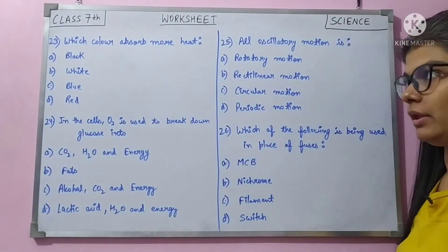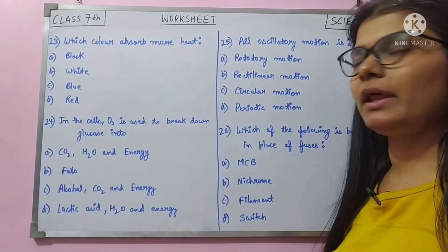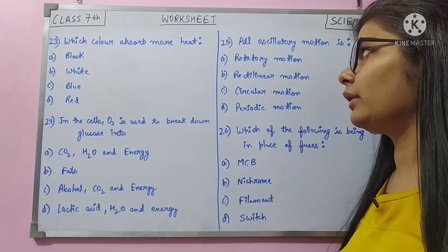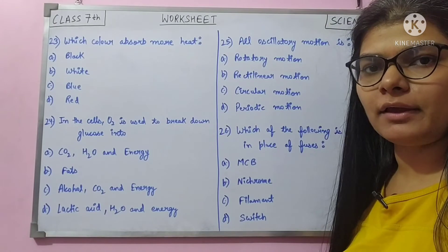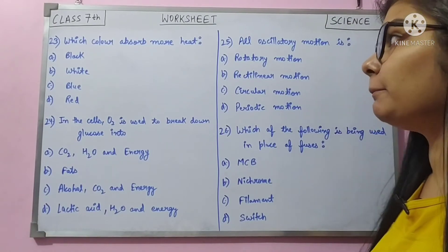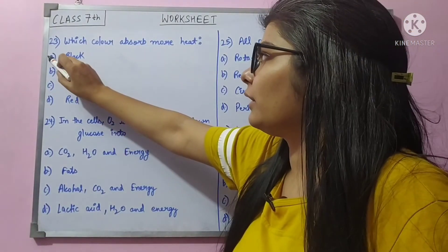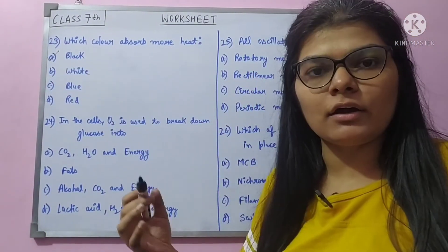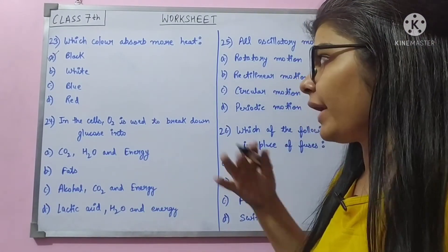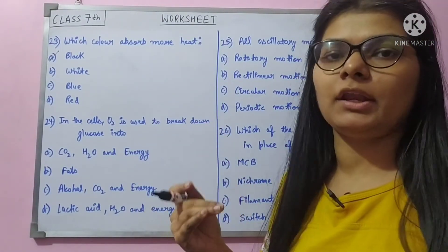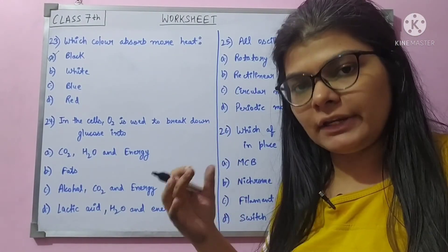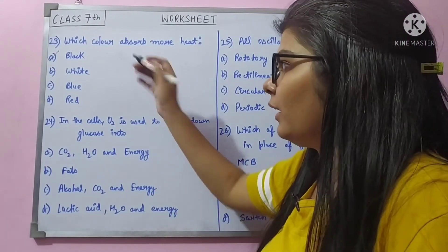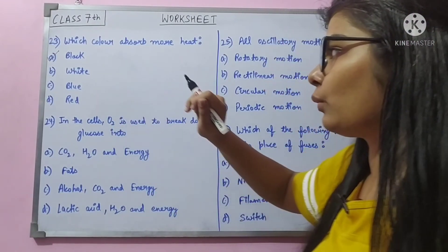Question number 23: which color absorbs more heat? Dark colors absorb more heat — that's why it is said to wear dark colors in winters. White color absorbs the least heat. Light and white colors should be worn in summers because it is very hot.